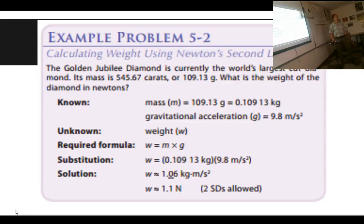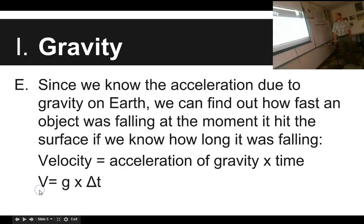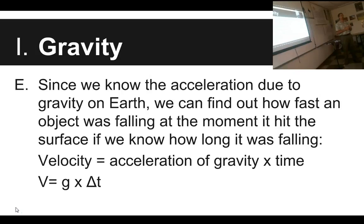Just like any other acceleration question, if we know how quickly something is accelerating and how long that acceleration has been applied, we can figure out how fast it's going. The acceleration due to gravity is 9.8 m/s². If something has been falling for a certain number of seconds, you can figure out how fast it's going. Velocity equals acceleration times time — and for gravity specifically, we use g instead of a: velocity equals g times t.